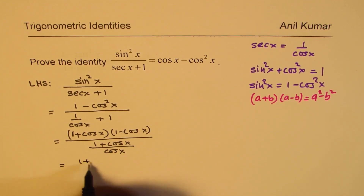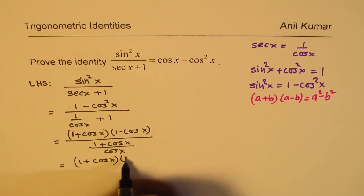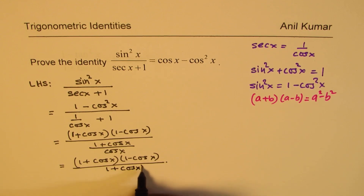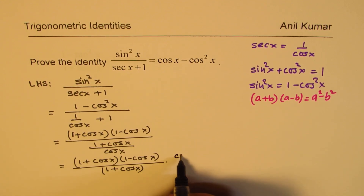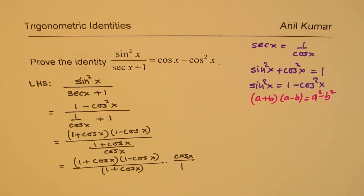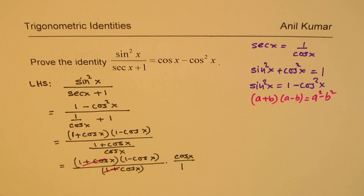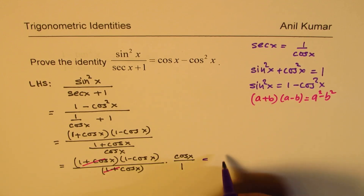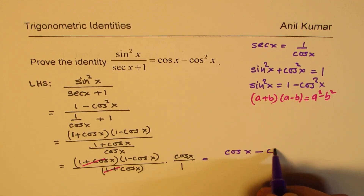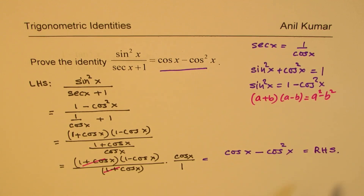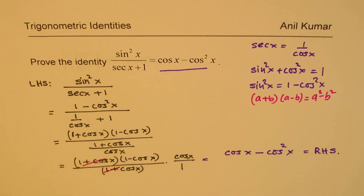We are left with (1 plus cosine x)(1 minus cosine x) divided by (1 plus cosine x), since the denominator from the secant plus 1 expression provides that factor. Cancelling (1 plus cosine x), we multiply and get cosine x minus cosine squared x, which is exactly the right-hand side. We have again shown that left-hand side equals right-hand side, proving the second identity.